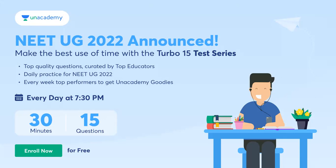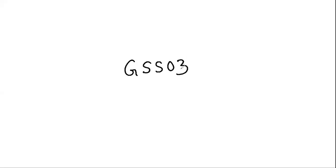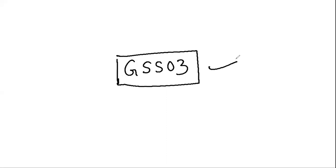How valuable is that question? So be careful answering. For MSET, one question carries one mark. Don't forget — the Turbo 15 test series has already been announced. Complete it properly. Every day at 7:30 PM, 13 minutes, 15 questions. You can enroll for free — no payment needed. Use referral code GSS03 to enroll for free.